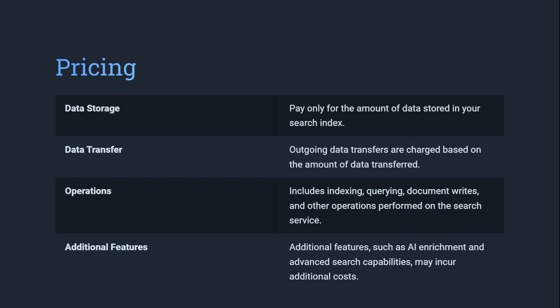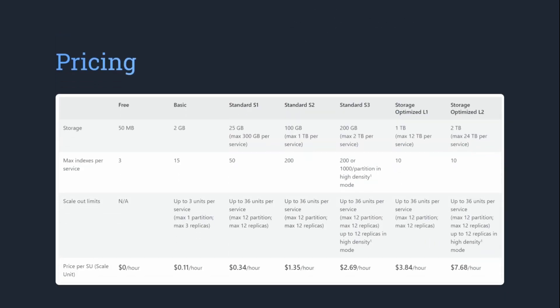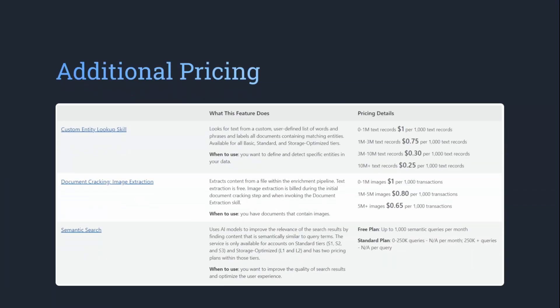When it comes to pricing, it all depends on the storage that you are using and the data transfer that is being charged as well. Even today you could start with the free version — it gives you 50 megabytes and you can have up to 3 indexes. Here you can see the additional pricing, which depends on custom entity lookup, document tracking, text from image extraction, or semantic search.